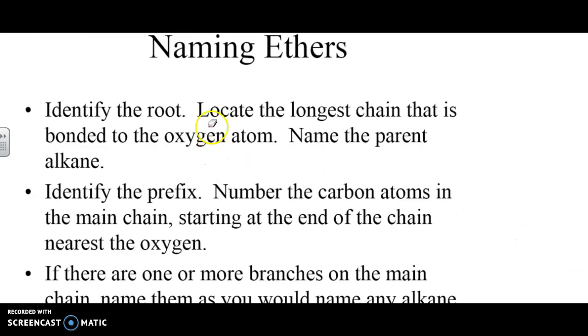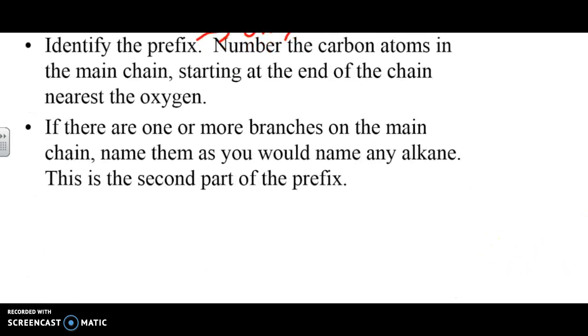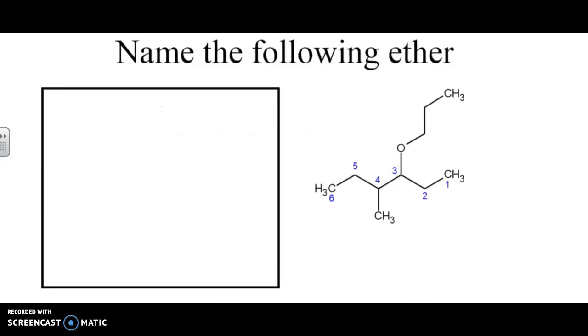So when we're naming the ethers, you look for the root, and you name the longest chain that's bonded to the oxygen atom. For the prefix, you look for the other side of the oxygen chain, and the ending of that word is going to be an oxy. Otherwise, the rules stay the same from previous lessons.